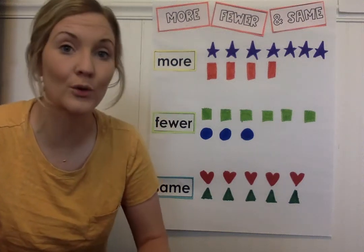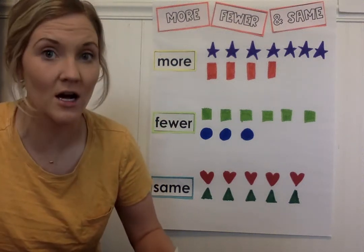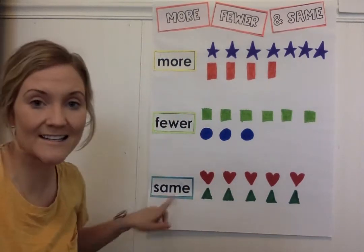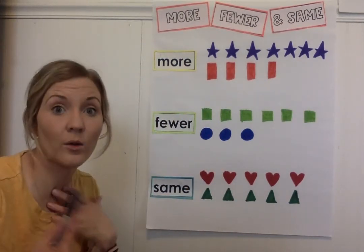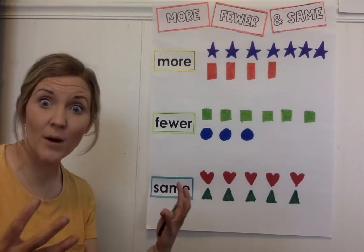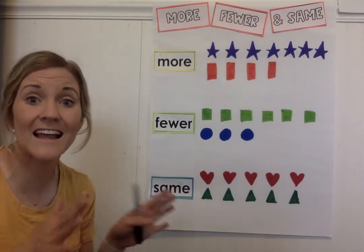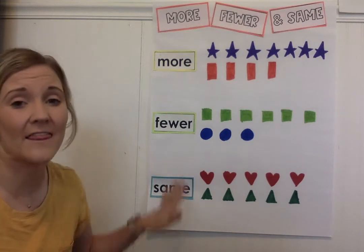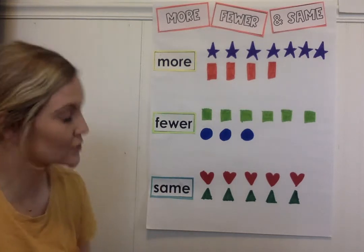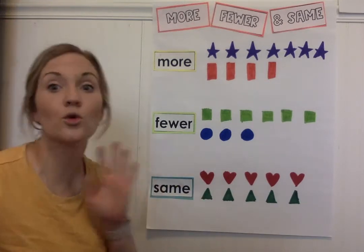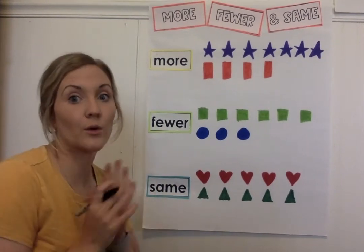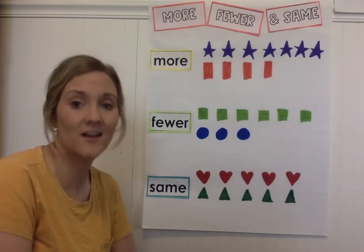Today for math, we're going to talk about what these words mean: more, fewer, and same — what they mean and what they really look like. We talked about them yesterday. More means you have bigger amounts; fewer or less means you have smaller amounts; and same means you have the same. So we're going to look at these groups and compare numbers — what we've been doing all week and will continue all month.